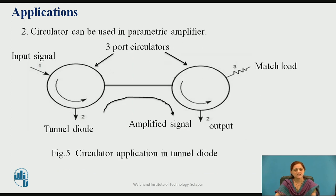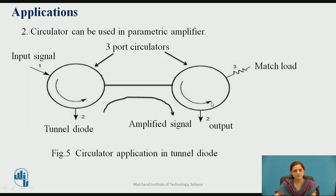The next application is that the circulator can be used in a parametric amplifier. Two 3-port circulators are used. The input is applied to port 1 of the first 3-port circulator, and the output goes to a tunnel diode. The output from the tunnel diode becomes the input to the second 3-port circulator, and at port 2 of the second circulator the amplified signal is obtained, according to the property of the parametric amplifier. Thus circulators can be used for different applications.